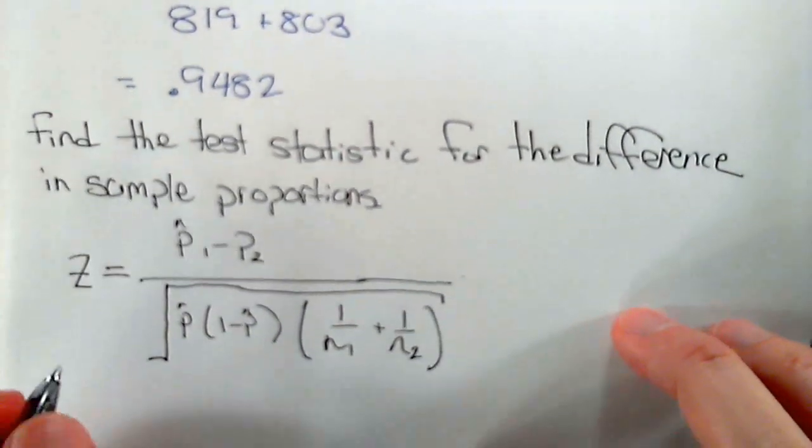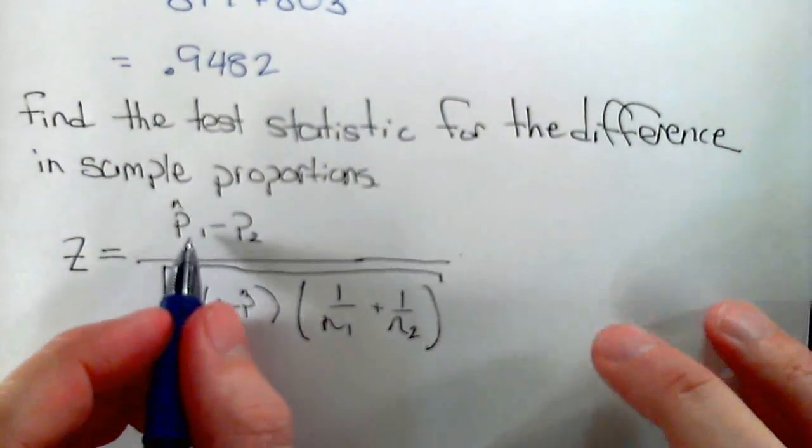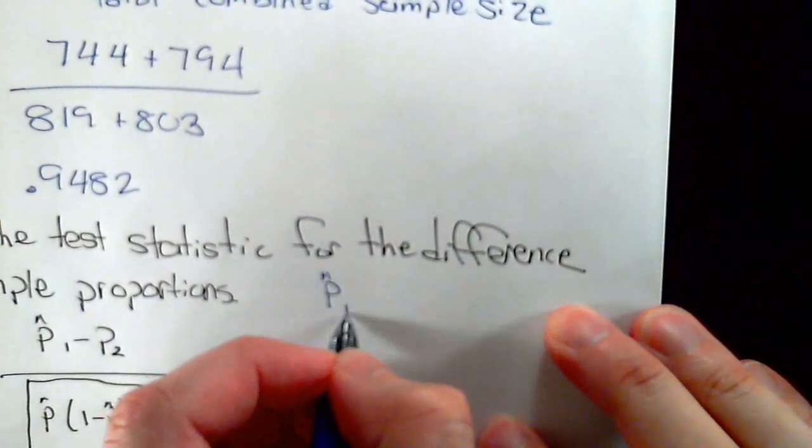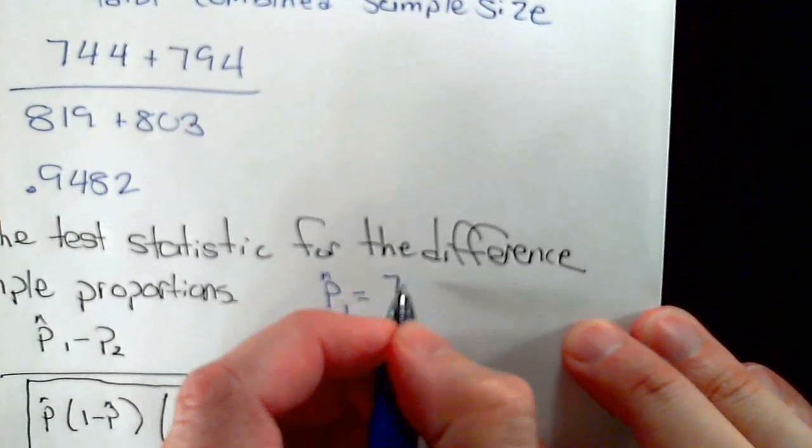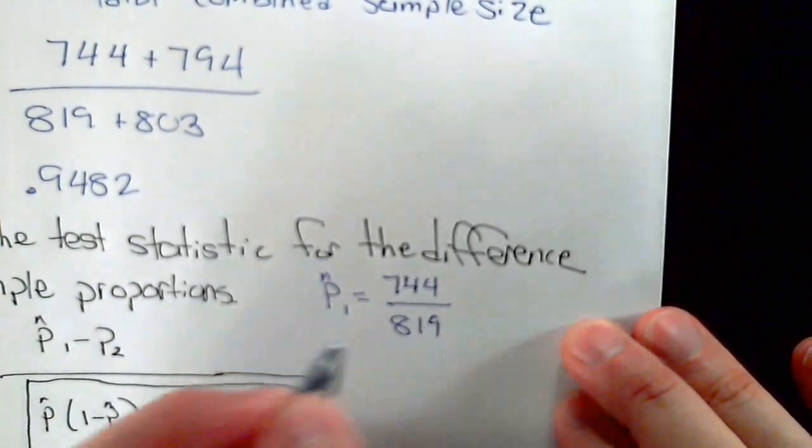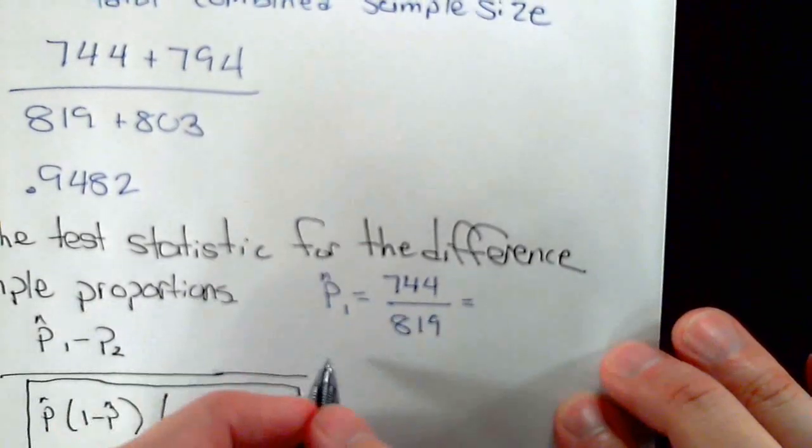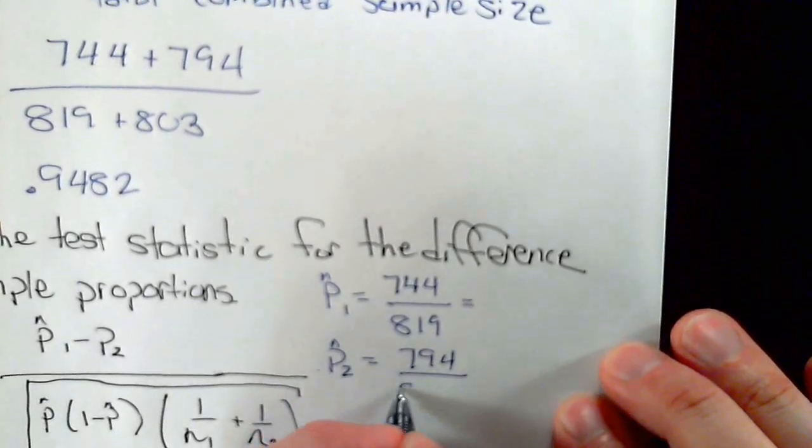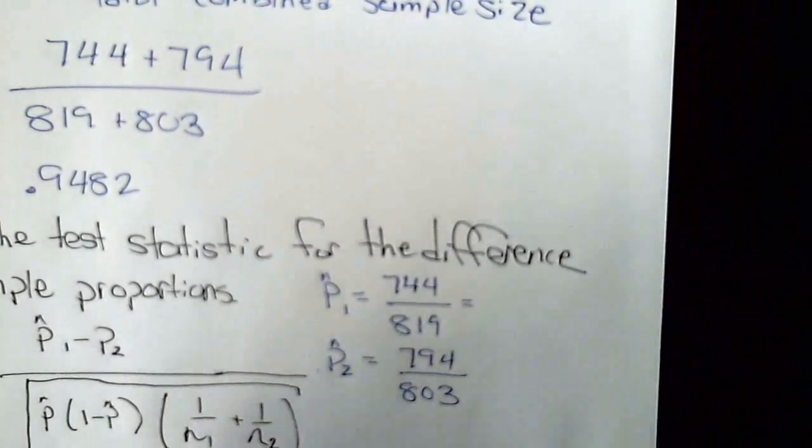Substituting these values in, we need to find p hat 1 and p hat 2. So p hat 1 is equal to 744 successes out of 819 individuals, and the second sample proportion had 794 successes out of 803 individuals.